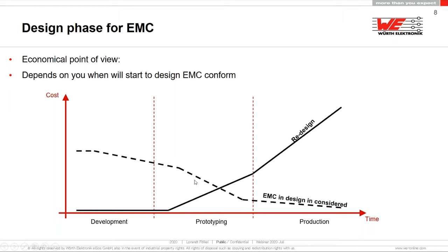If you've already reached the prototype stage and implemented your EMC experience — even just a simple LC filter — and you go to the EMC chamber and they say it's not good, you can simply take a soldering iron, remove the zero-ohm resistor, put in a ferrite bead and a small capacitor matched to the frequency you want to filter, and pass the EMC test. You don't need to redesign your device. I highly recommend doing this in the early stage, at least before prototyping and not when you want to start mass production.